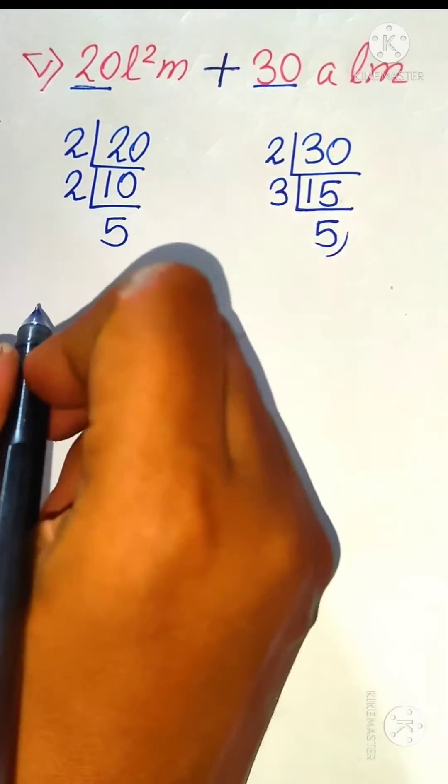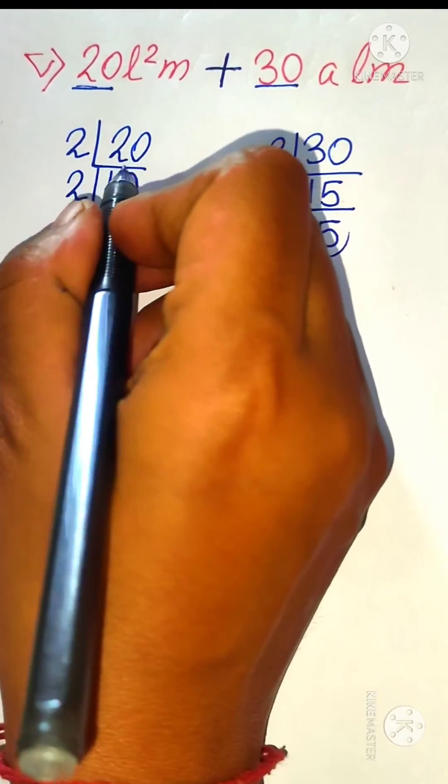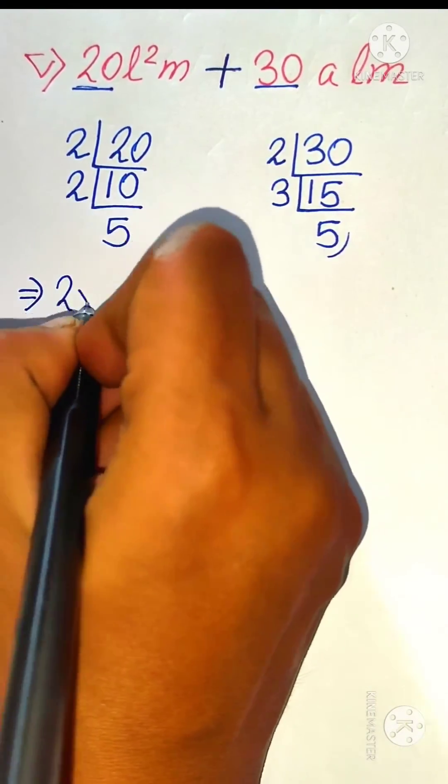3 times 5 is 15. So 5 is a prime number, so stop here. So let's rewrite the question. In place of 20, we can write 2 times 2 times 5.